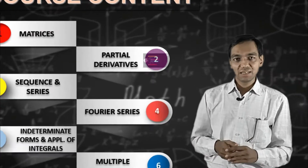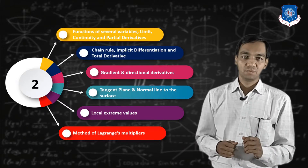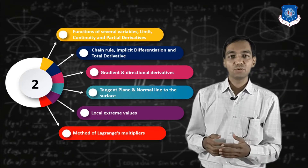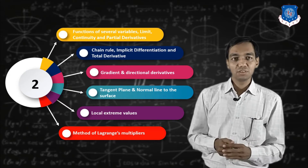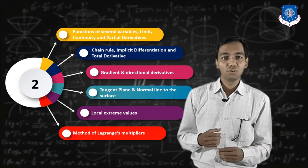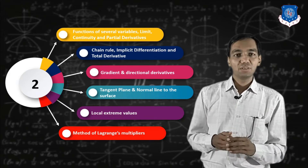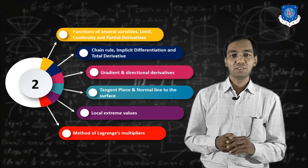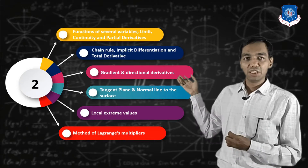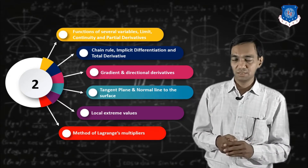The second topic is partial derivatives. You have already learned limit, continuity, and differentiation of one-variable functions, but here we are going to learn it for multivariable functions. We will define the multivariable function and find its limit, continuity, and differentiability. Topics covered include chain rule, implicit function, total derivative, and applications of partial derivatives.